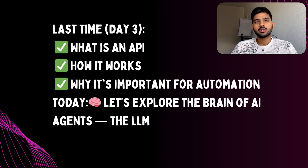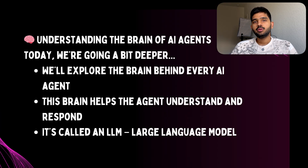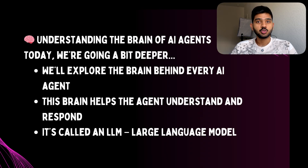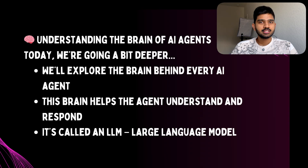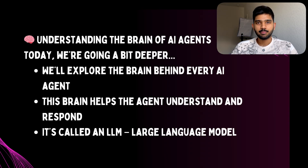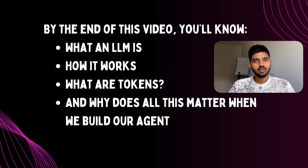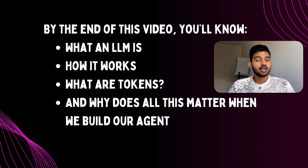Welcome back to Day 4 of our AI agent learning journey. In Day 3 we talked about what APIs are, how they work, and why they are super important to build automations. Today we are going a little bit deeper — we are going to understand the brain of our AI agents, which we call an LLM. By the end of this video you'll learn what an LLM is, how it works, what tokens are, and why all this matters when we build our own AI agent.